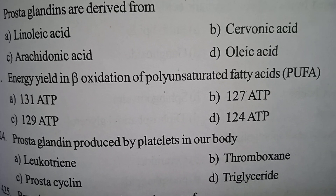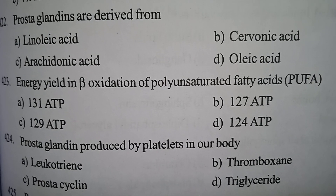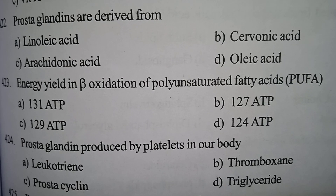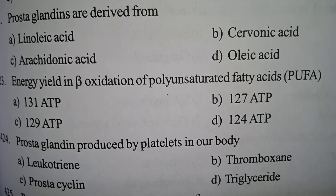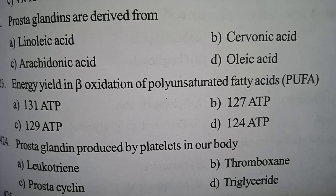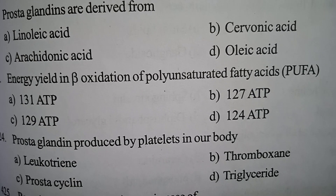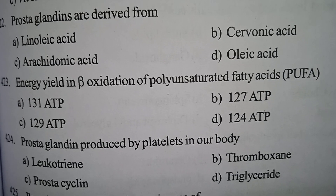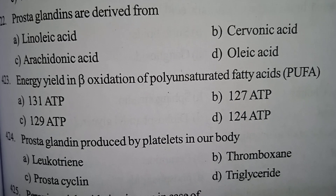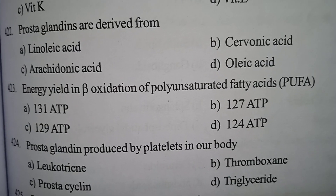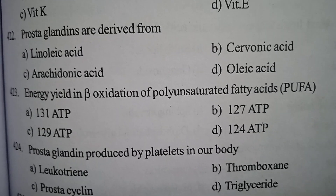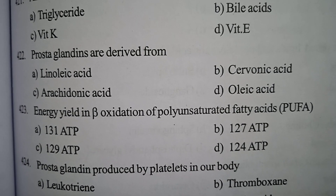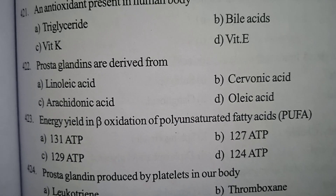Next one: prostaglandins produced by platelets in our body — options include prostacycline, thromboxane, and triglyceride. Correct answer: option B, thromboxane. If you like the video please like and subscribe to my channel and share. Thank you.